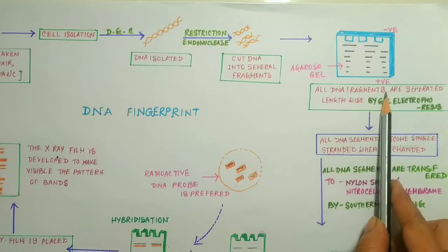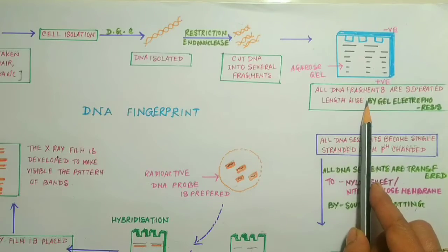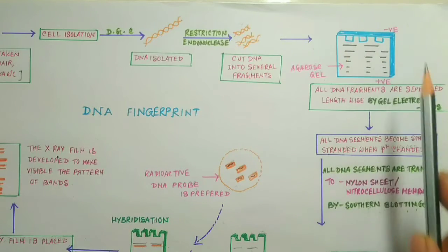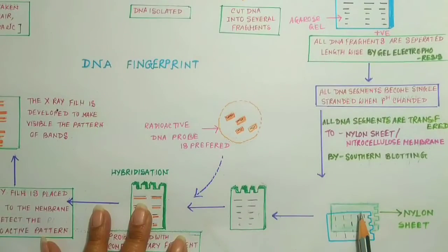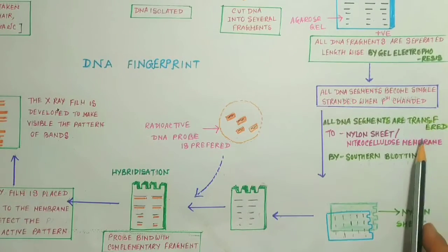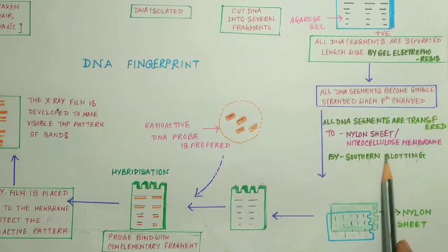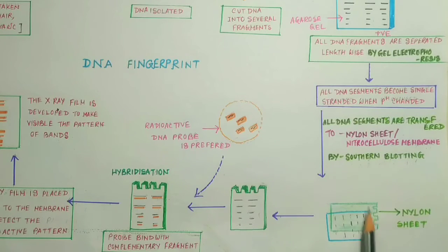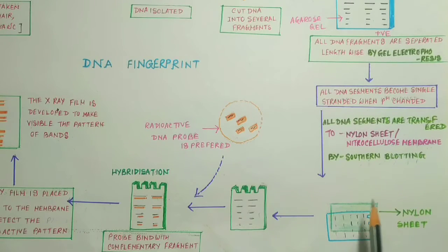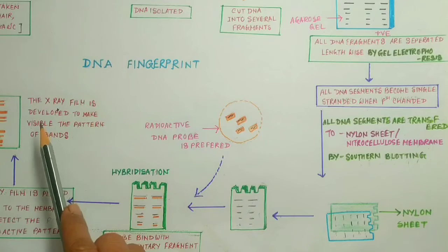After all DNA fragments are separated lengthwise, these DNA fragments have to be shifted to a nylon sheet or nitrocellulose membrane by the process known as Southern blotting. This is done to make the DNA strands visible so that we can get the final result.